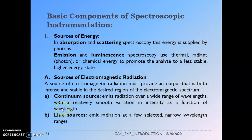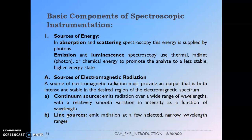There are two different types of electromagnetic radiation sources: continuum sources and line sources. Continuum sources emit radiation over a wide range of wavelengths with relatively smooth variation in intensity as a function of wavelength. Line sources emit radiation at a very few selected wavelength regions — narrow wavelength ranges — emitting energy at very fixed wavelength regions, whereas continuum sources work over wide wavelength regions.